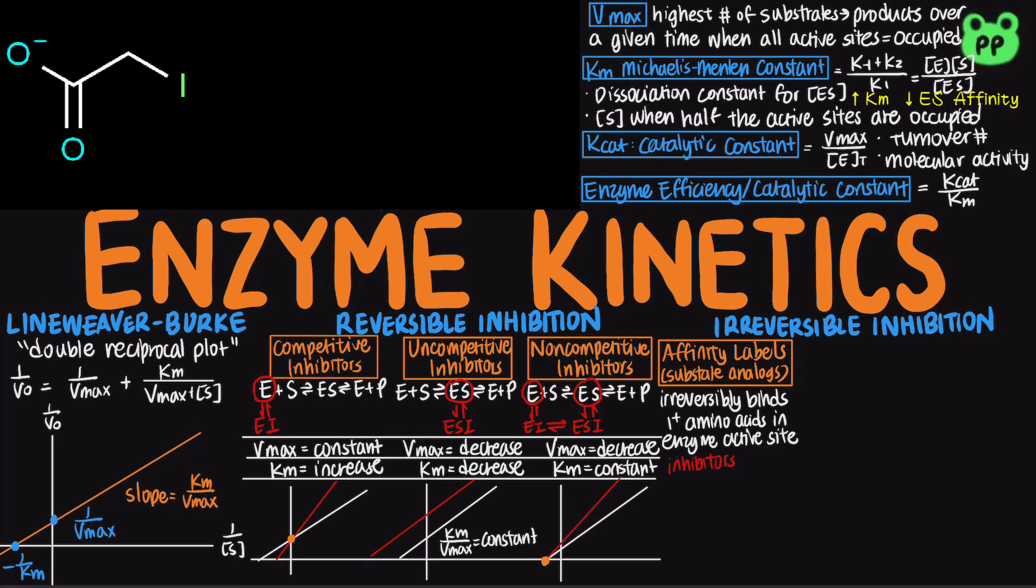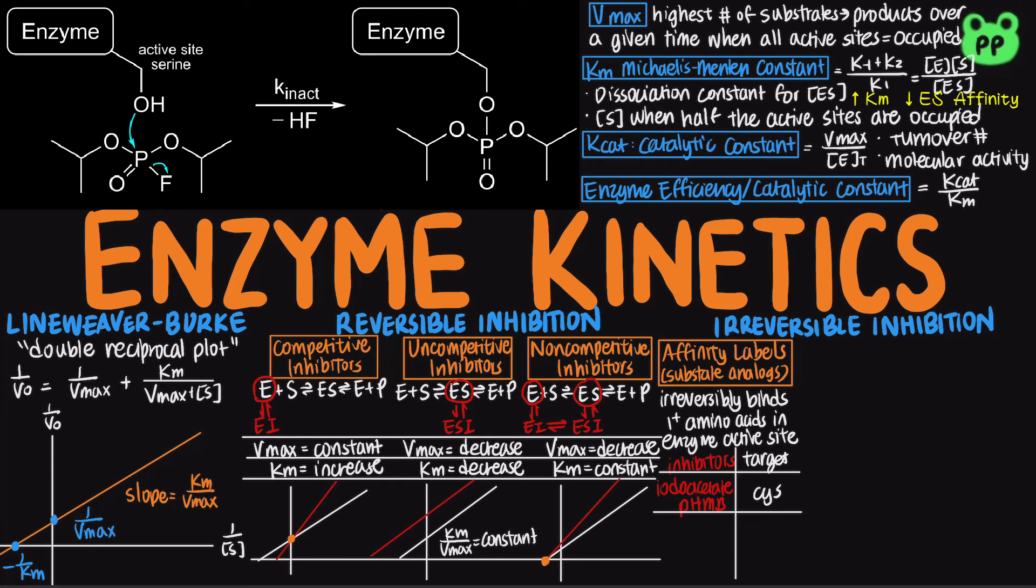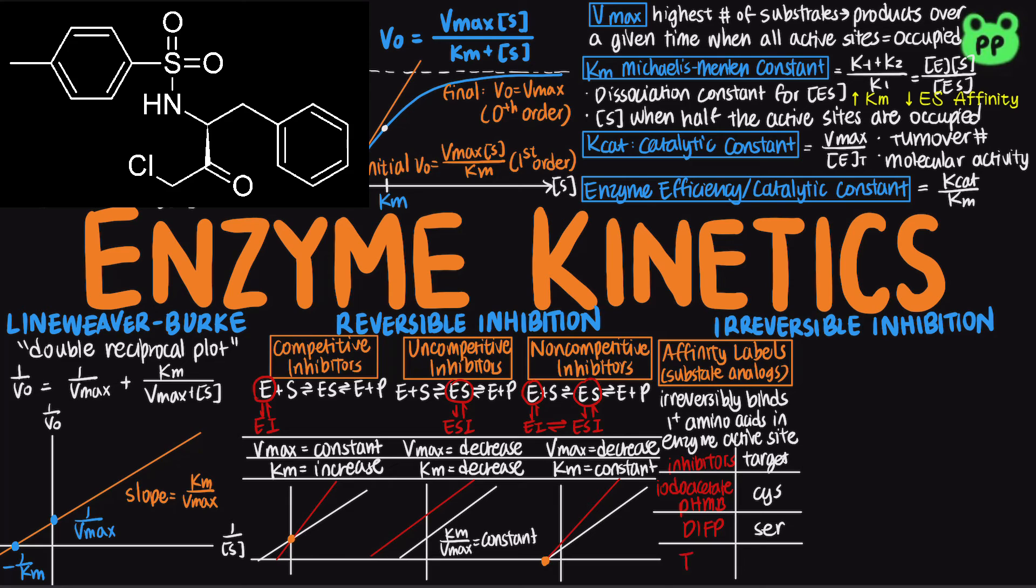Examples include iodoacetate MPHMB, or polyhexamethylene biguanide, which targets cysteine residue, DIFP, or diisopropyl fluorophosphate, which targets serine residue, and TPCK, or tosylphenylalaninol chloromethyl ketone, which targets histidine residue.